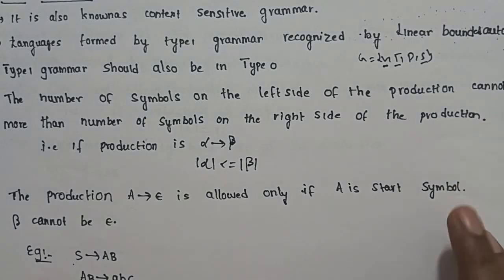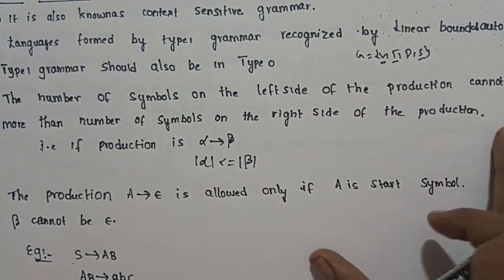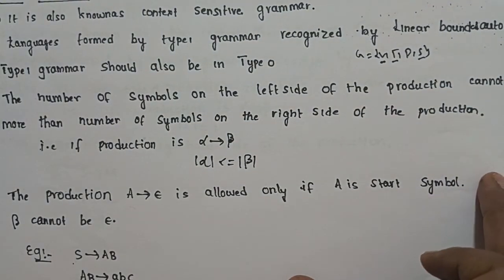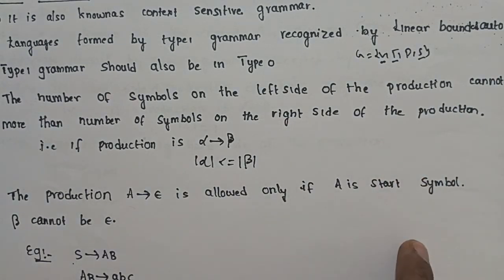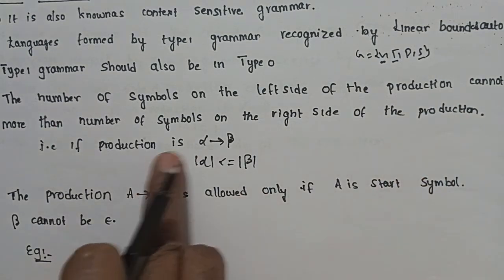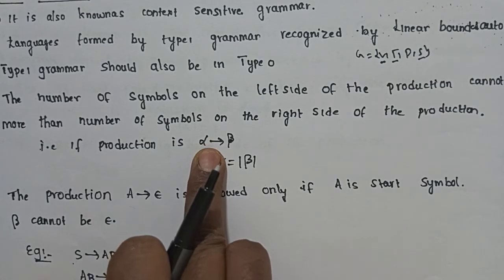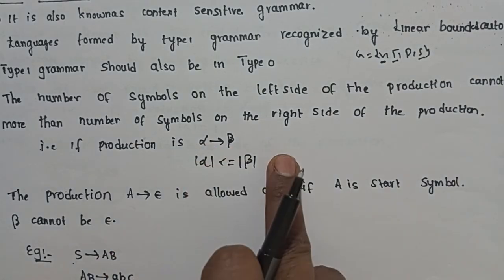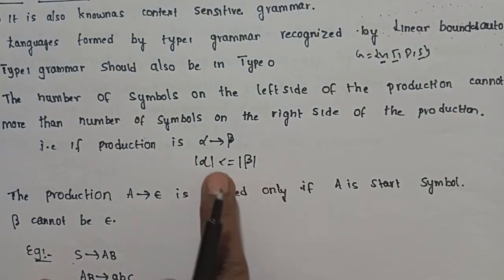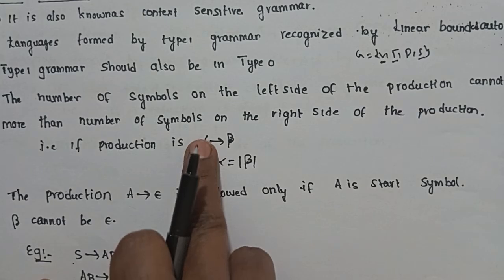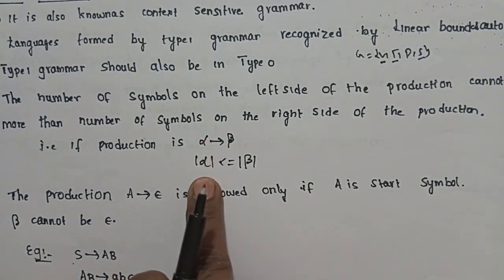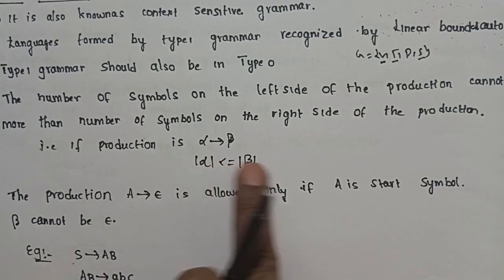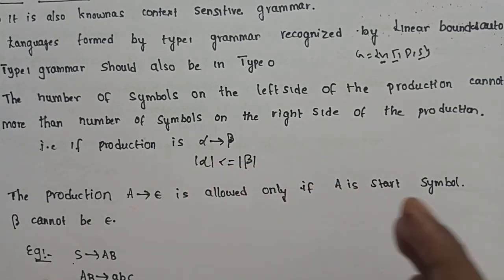In type 1 grammar, the rule of production is alpha → beta, where the length of the left-hand side of the production symbols should always be less than or equal to the length of the symbols on the right-hand side of the production.